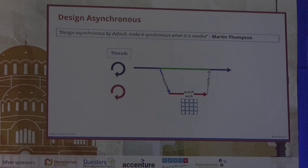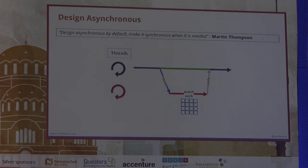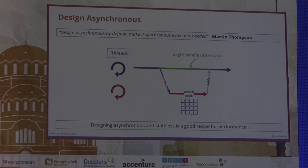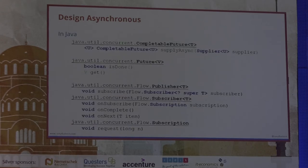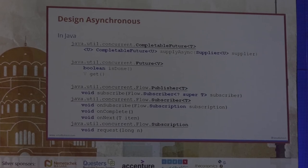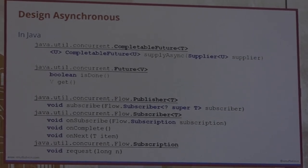Martin Thompson said: design asynchronous by default and make it synchronous only when needed. If you design asynchronously, you send a request and can handle other tasks while waiting — you're not blocked. Once notified with the response, you resume work. I would add: if you design asynchronous and stateless, you can scale incredibly well. In Java, the API for asynchronous design is the Flow API since Java 9, but CompletableFuture or Future are also available for this paradigm.